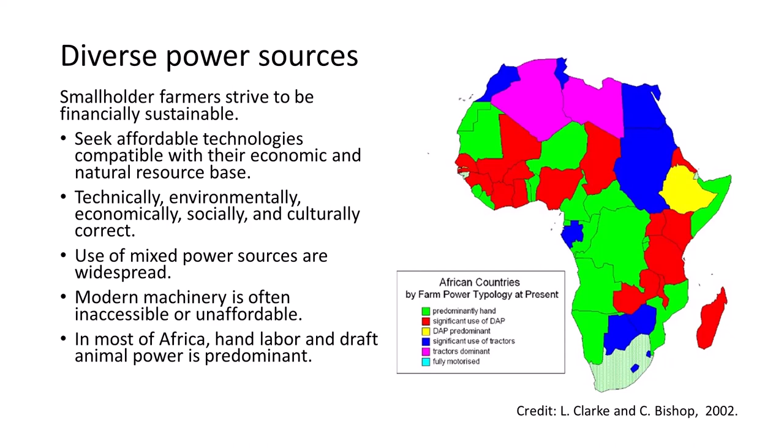Worldwide, smallholder farmers strive to be financially sustainable and seek affordable technologies compatible with their economic and natural resource base. Diverse power sources are widespread across Africa, and modern machinery is often inaccessible or unaffordable. Areas in green show where hand labor is dominant, while yellow and red show where draft animals are used extensively, and wheeled tractors are common in the purple and blue areas, mostly across North Africa.